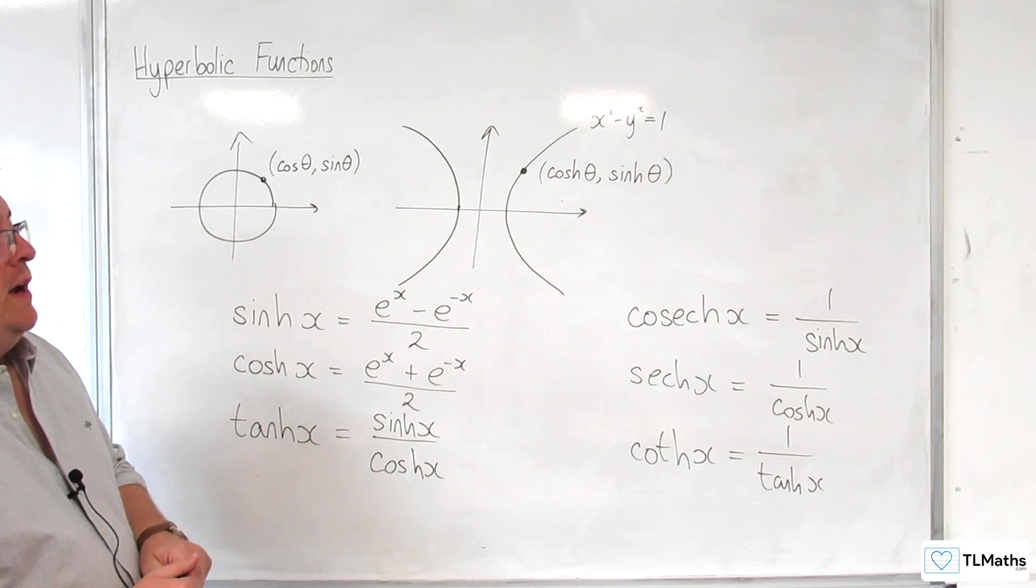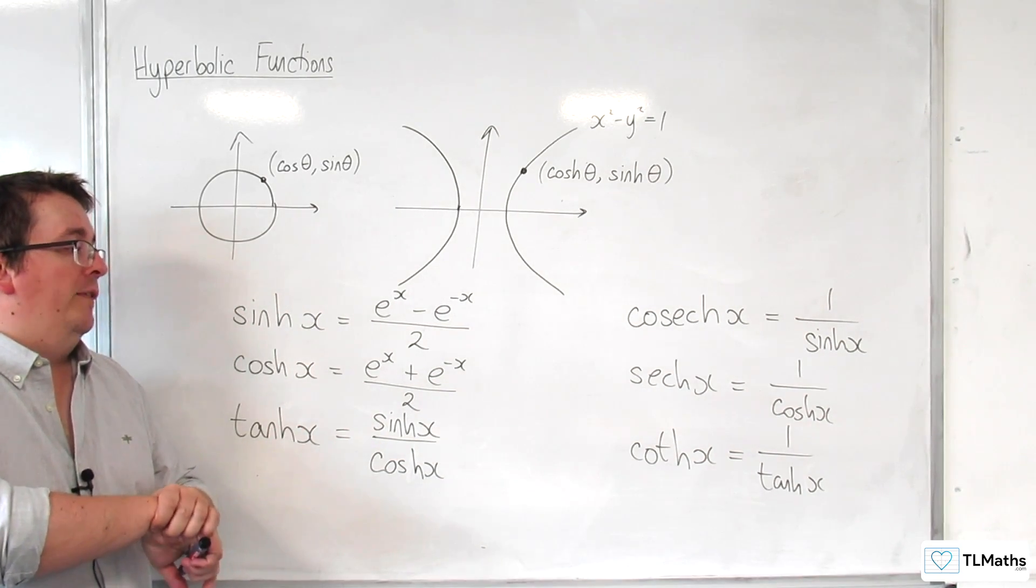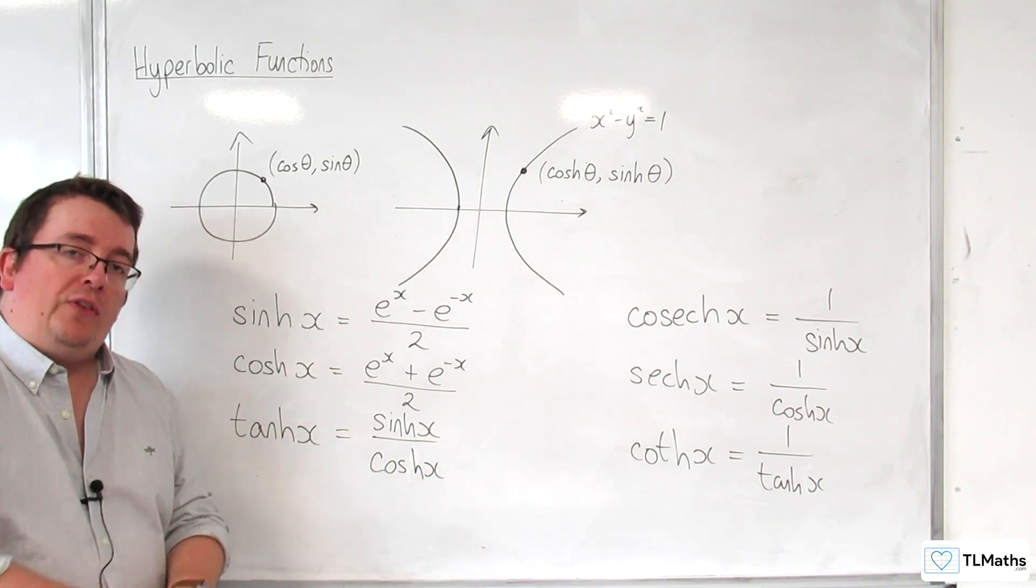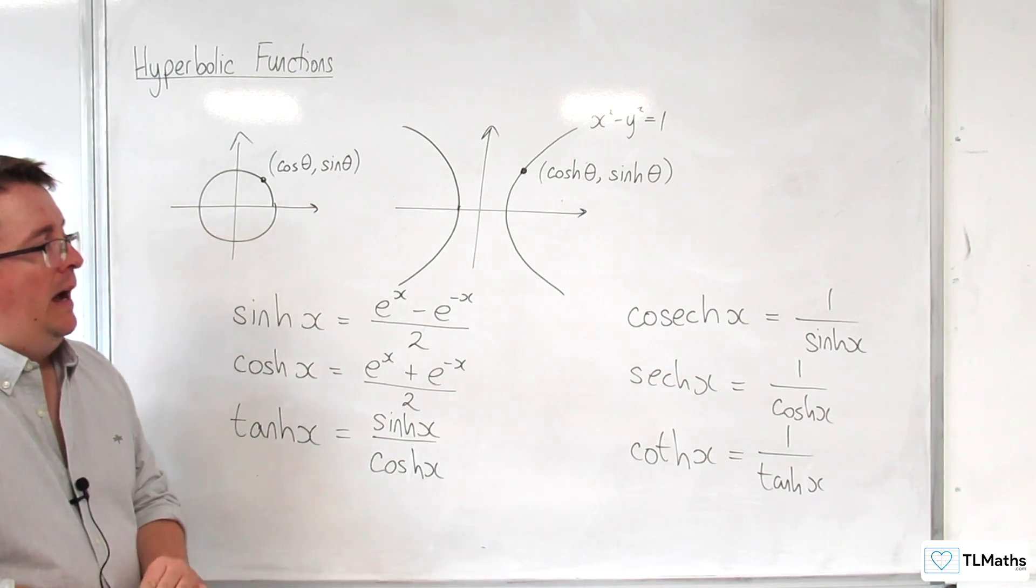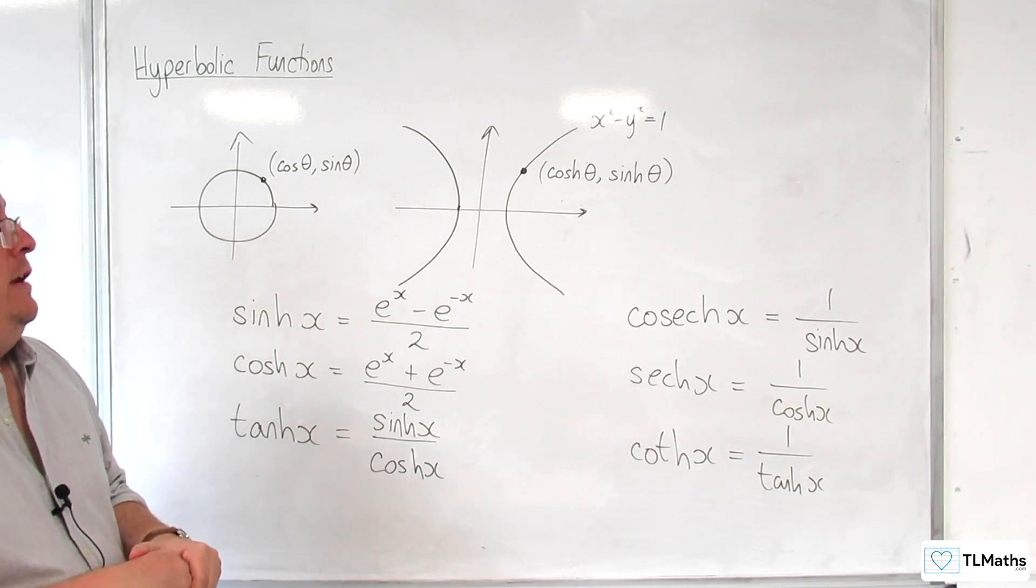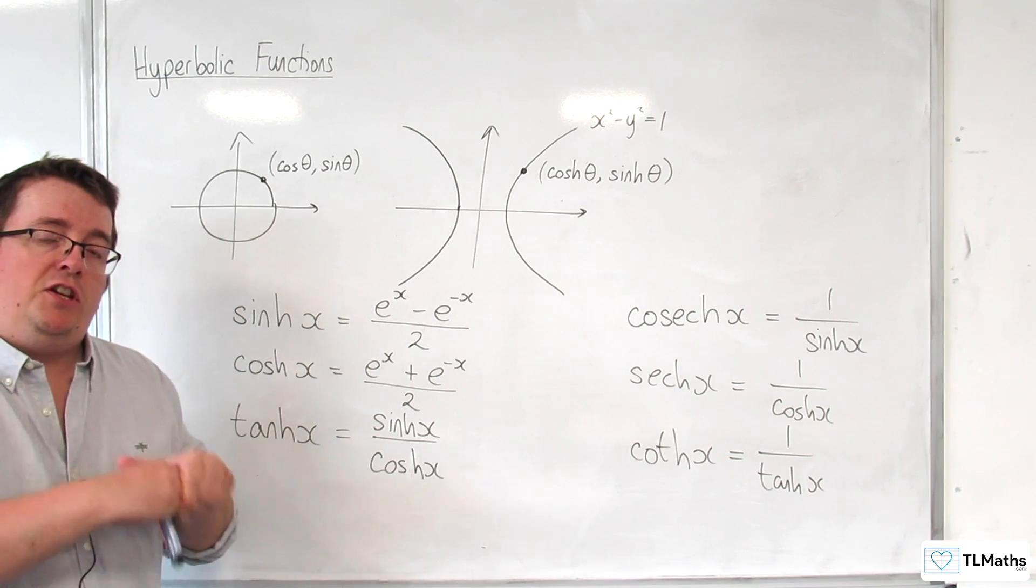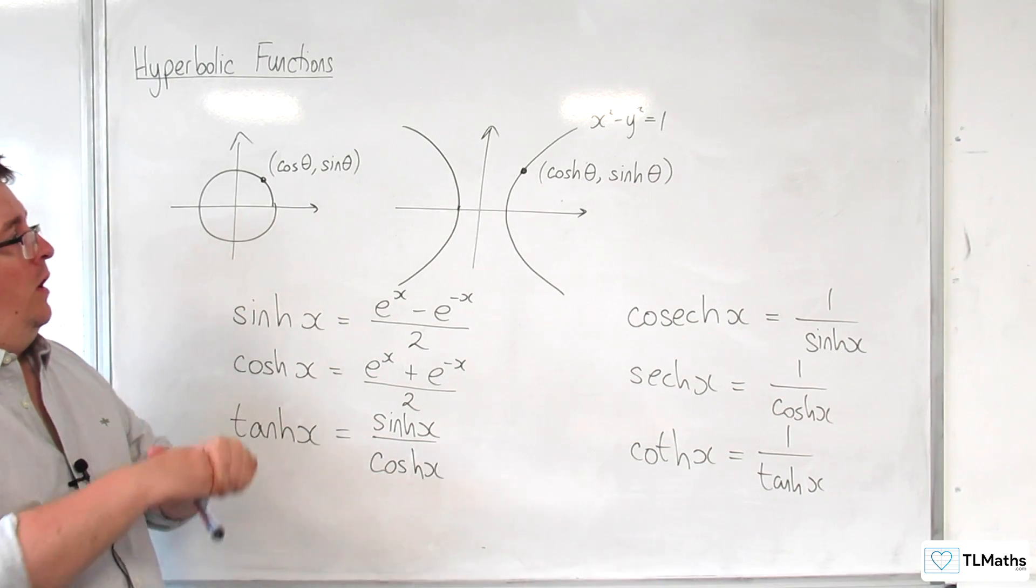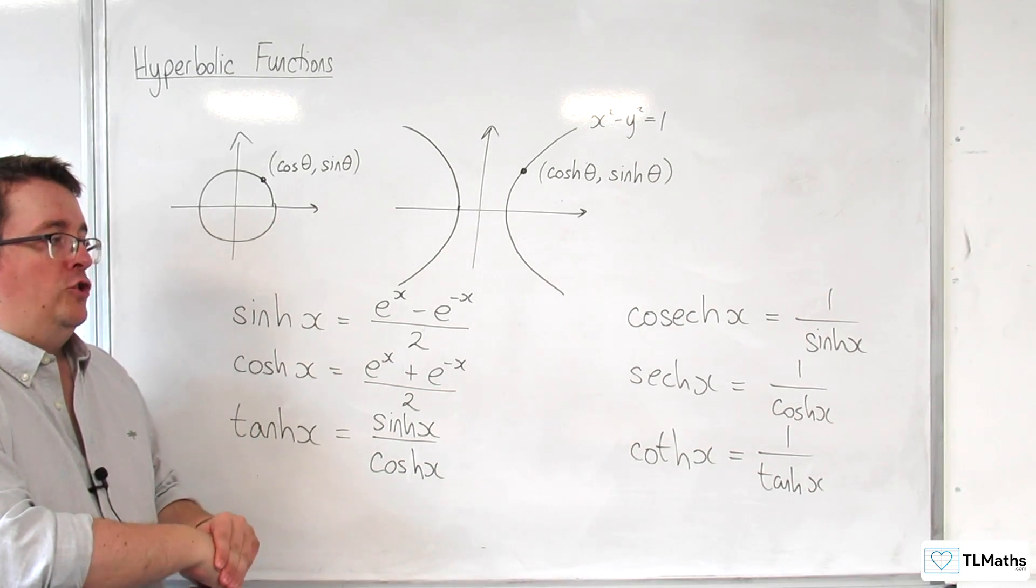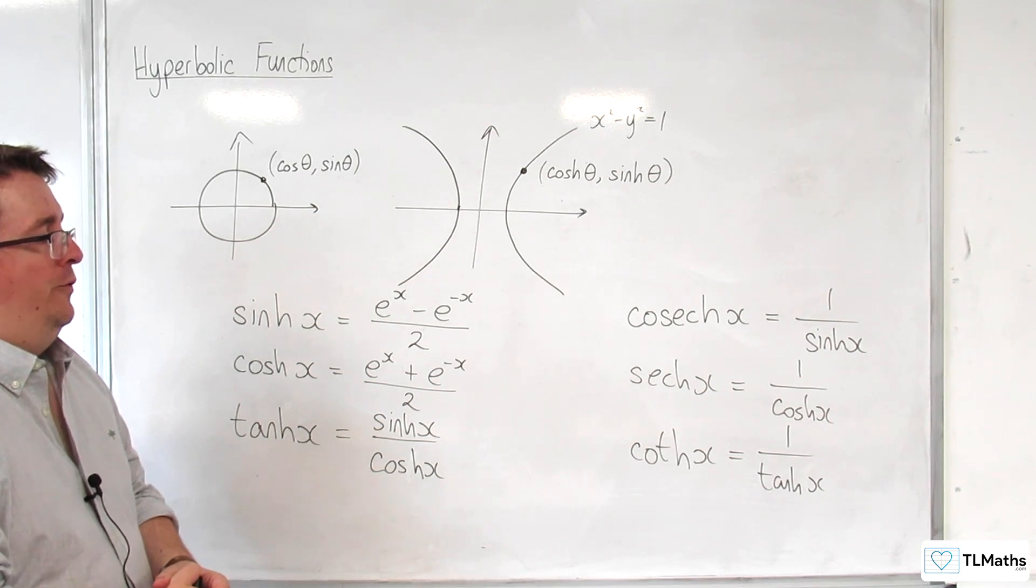Now, what we're going to develop, first of all, are the graphs of y equals sinh x, y equals cosh x, y equals tanh x. We're going to be looking at their ranges and domains. We're going to be interested in looking at the identities that go with them. So, hyperbolic functions have very close links to the trigonometric functions in their identities as well, as we will develop.